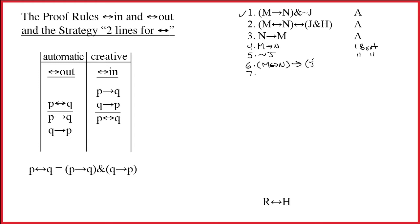So we get M double-arrow N arrow J ampersand H. Of course, this double-arrow inside the parentheses is its own thing. We can't touch that one because it's inside parentheses. We only ever work on main connectives.